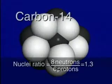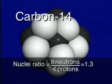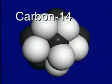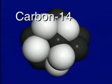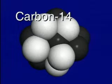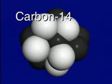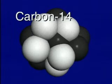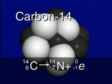The nucleus of a carbon-14 atom is unstable. At some time, this unstable nucleus will emit a high-energy electron called a beta particle, which has a one minus charge. The beta particle causes a neutron to change to a proton, and the carbon-14 atom then decays into a nitrogen-14 atom.